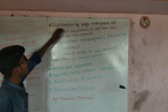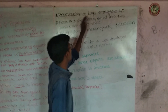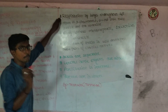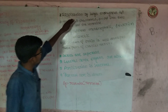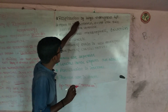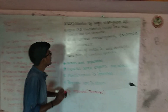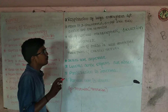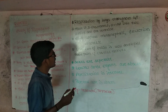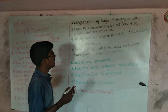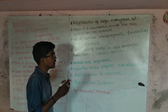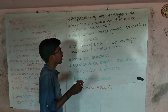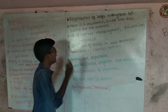Respiration is by lungs throughout the life in the case of reptiles. But in the case of amphibians, respiration takes place by gills, skin, and lungs. If present in water, respiration takes place by skin; if present on land, respiration takes place by lungs.